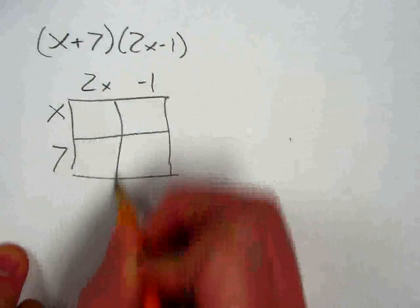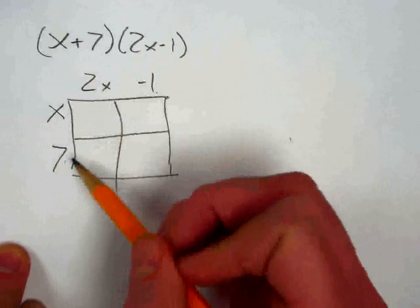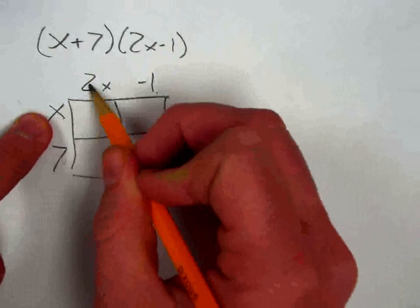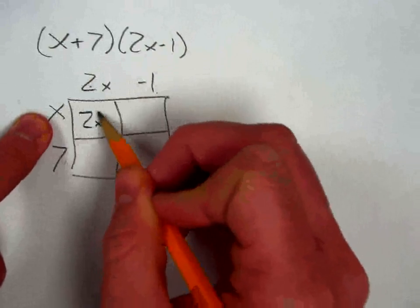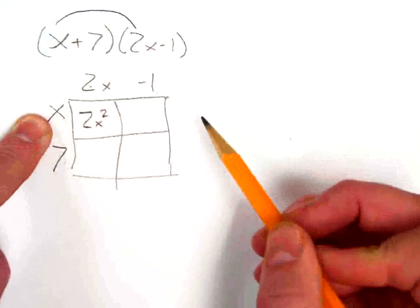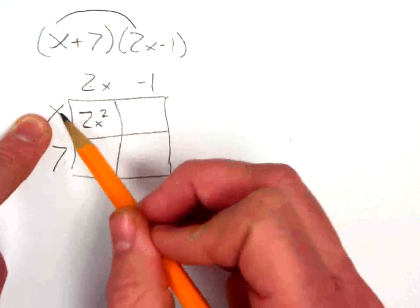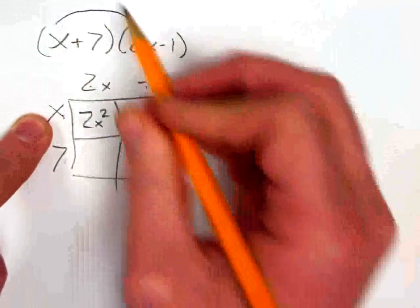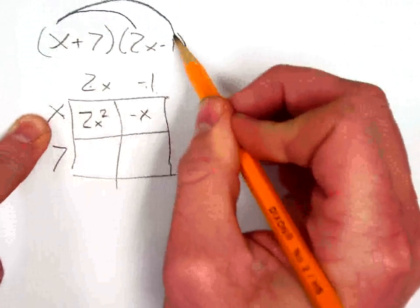If I'm going to multiply using the box method, I put the factors on the side of the box. First I would multiply x times 2x, and that would give me 2x squared. In other words, I would multiply there. Then I would multiply x times negative 1 to give me negative x, or in other words I would multiply there.